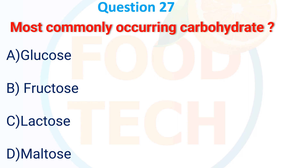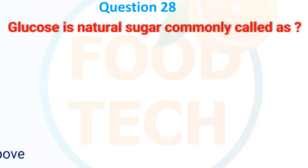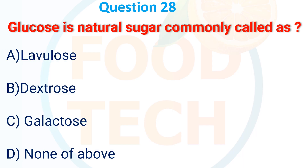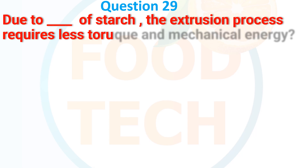Question 24: Major sugar component in honey — A. Dextrose, B. Glucose, C. Levulose, D. Sucrose. The answer is Levulose. Question 25: Most commonly occurring carbohydrate — A. Glucose, B. Fructose, C. Lactose, D. Maltose. The answer is A. Glucose. Question 26: Glucose is a naturally occurring sugar commonly called — A. Levulose, B. Dextrose, C. Galactose, D. None of the above. The answer is B. Dextrose.